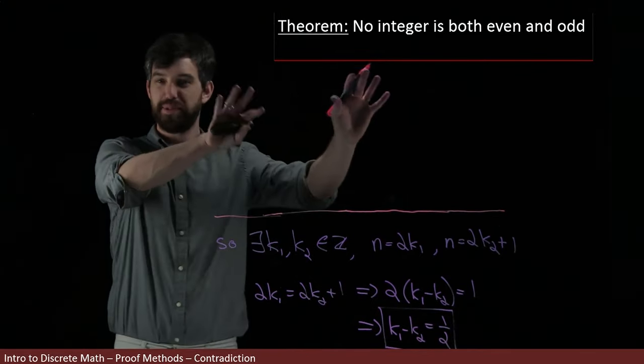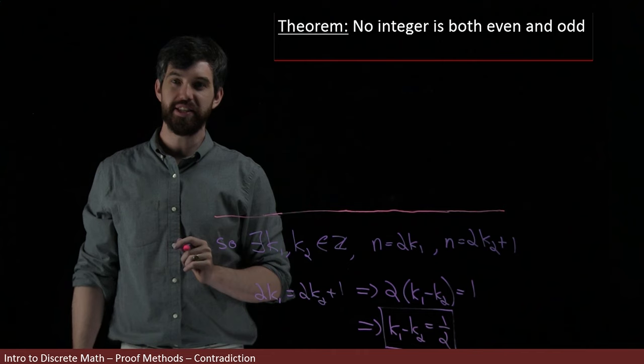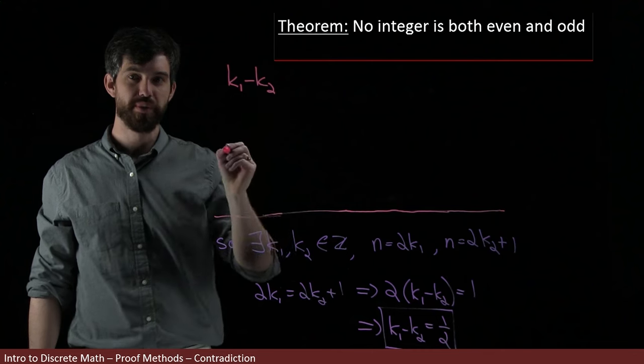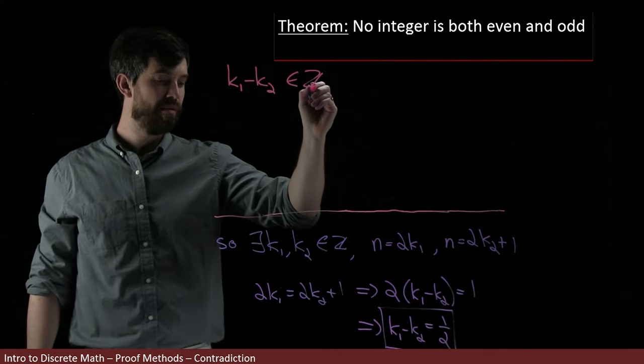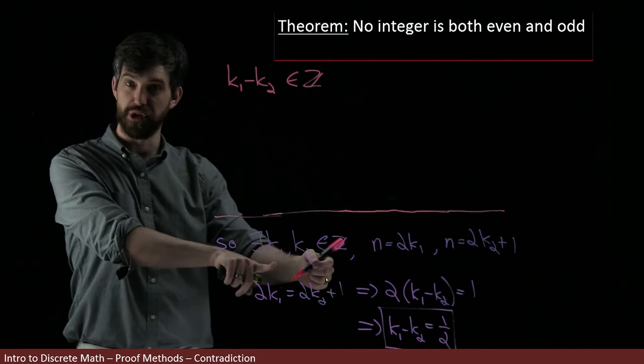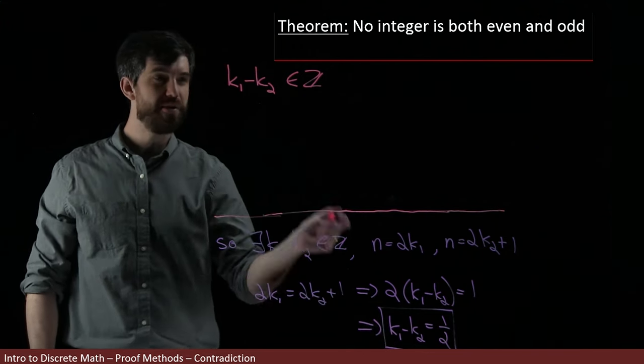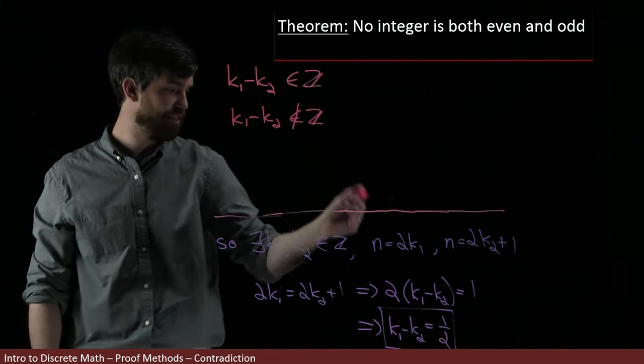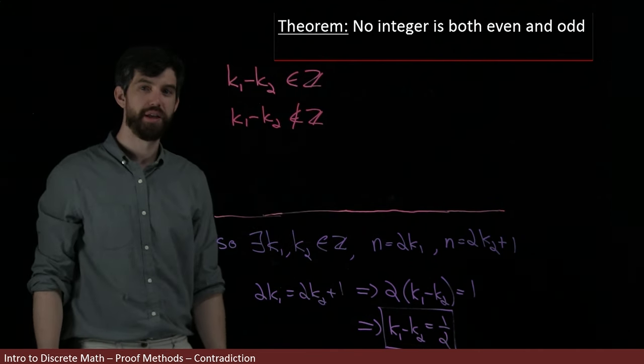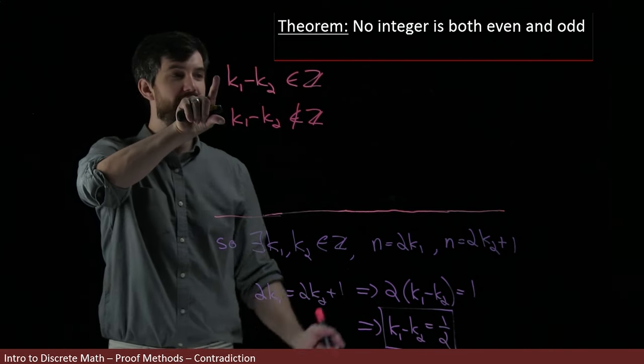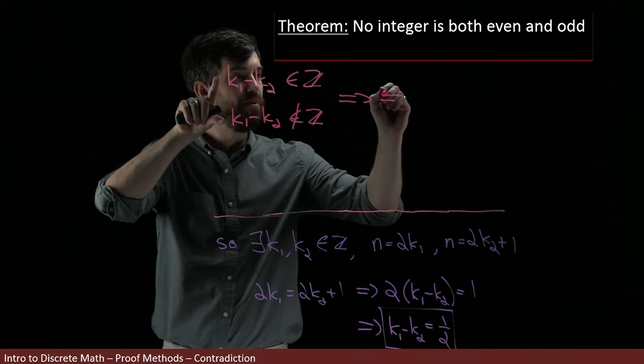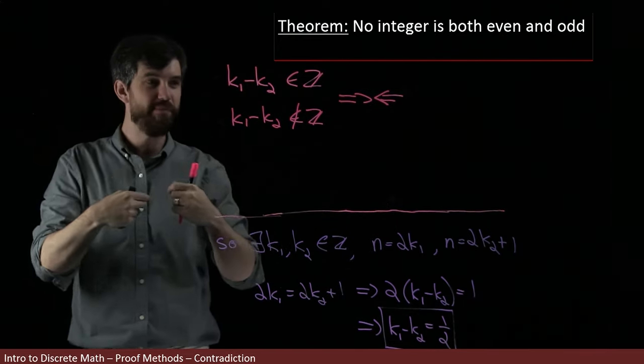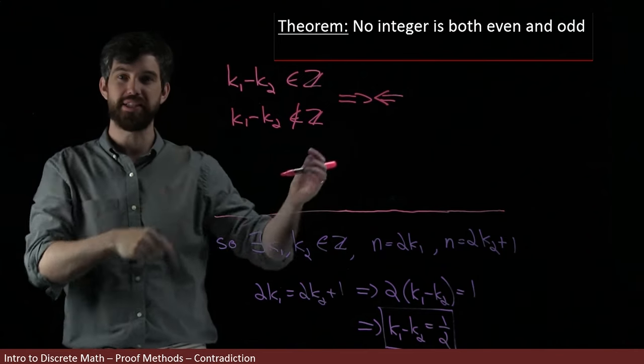That contradiction cannot be. So clearing up some space for myself, what I have is this contradictory claim first, that the k1 minus the k2, that this is going to be an integer, which we got from noticing that it was the difference of two different integers. And then from what I have down here, I've got that my k1 minus k2 is not an integer because it's equal to a half and a half is not an integer. And this is a contradiction. The symbol I sometimes use for contradiction is two arrows that are both pointing to each other because they like imply nothing. But either way, what I mean by this is a contradiction.